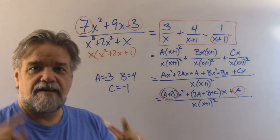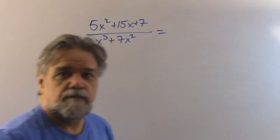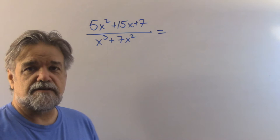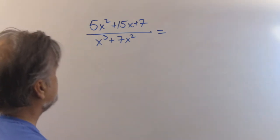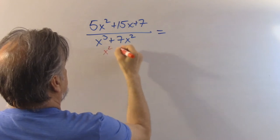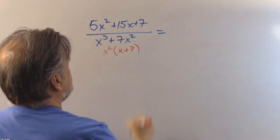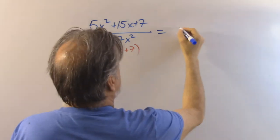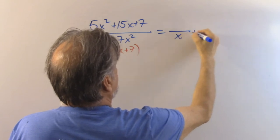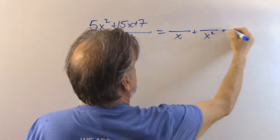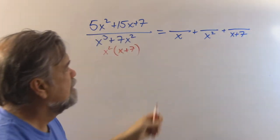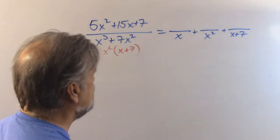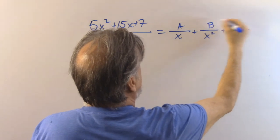Let's do another one. Now we have 5x squared plus 15x plus 7 over x cubed plus 7x squared. We can factor out an x squared to get x squared times x plus 7. So we're going to have the same issue as before: something over x plus something over x squared plus something over x plus 7. These two fractions both correspond to the x squared. We'll call this a, this b, and this c.